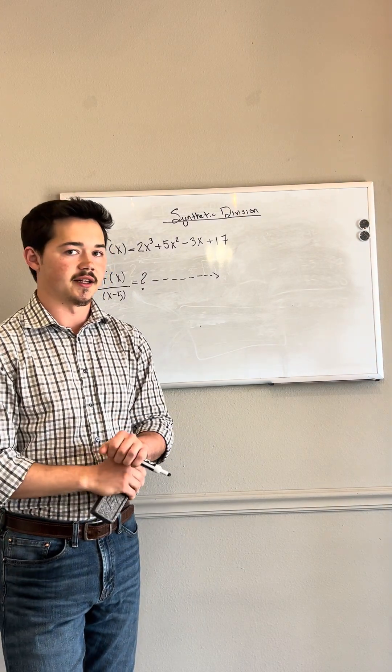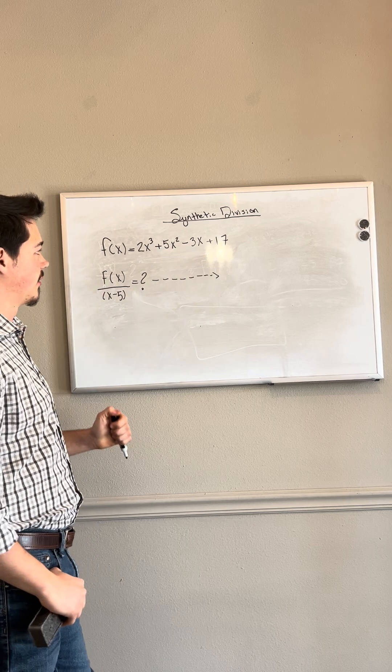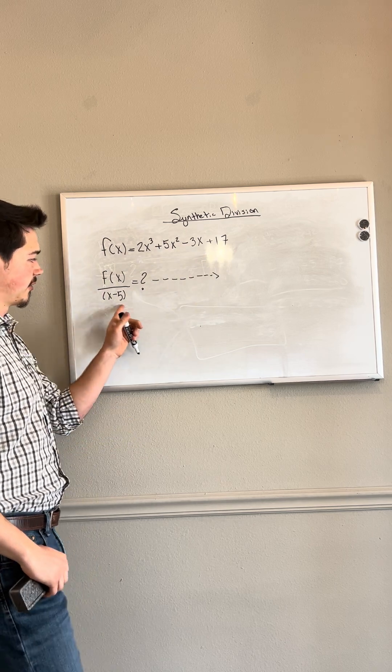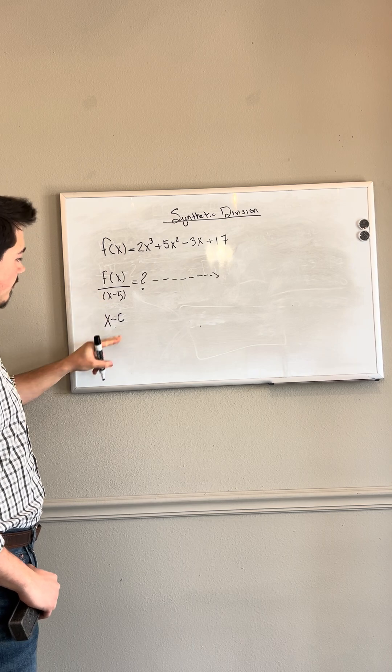So here we have a quick example of synthetic division, a specific case of polynomial division, where we have our original polynomial equation divided by another variable term, and that term is given in the form x minus c, where c is a constant.